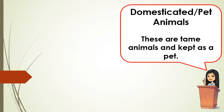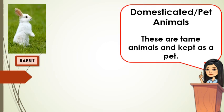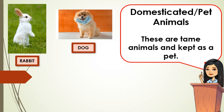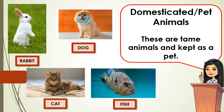Now, let's tackle the different animals in our surroundings. First, we have the domesticated or pet animals. These animals are tamed and kept as pets. Examples of these are rabbit, dog, cat, and fish. These animals are classified as domesticated or pet animals.